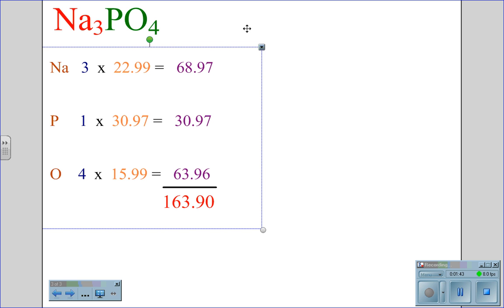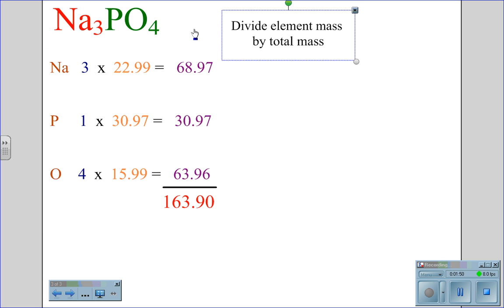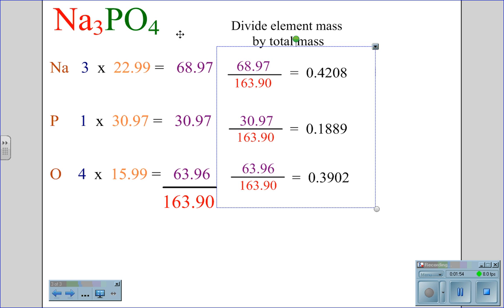Now that I have the molar mass of this molecule, the next thing I want to do is divide the element mass by the total mass. So for the case of sodium, 68.97 divided by 163.90 gives me 0.4208. 30.97 divided by 163.90 is 0.1889, and 63.96 divided by 163.90 is 0.3902.